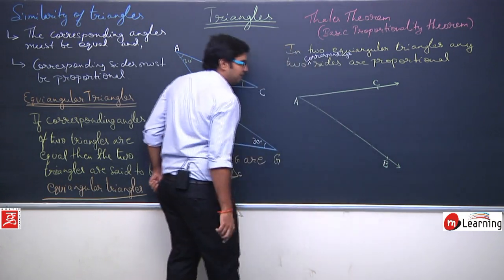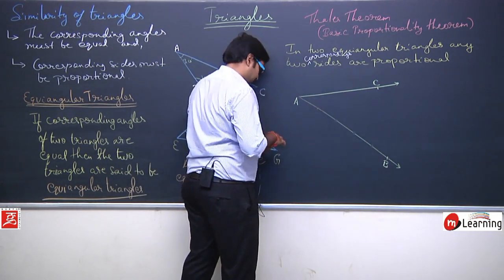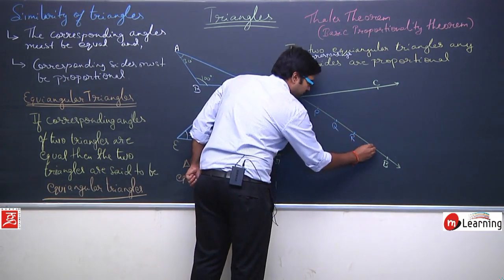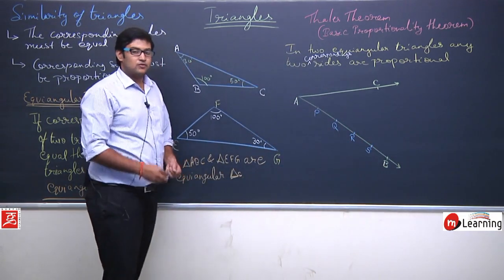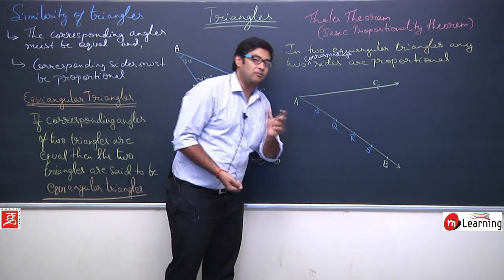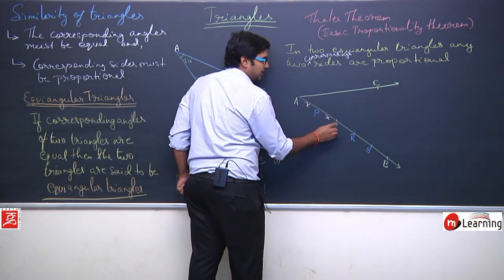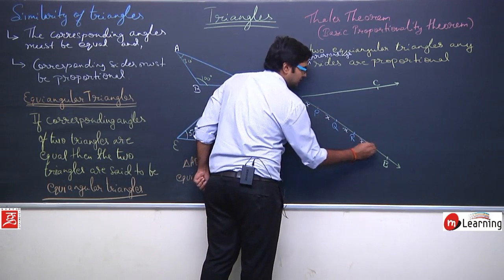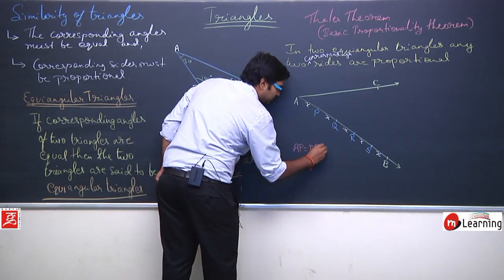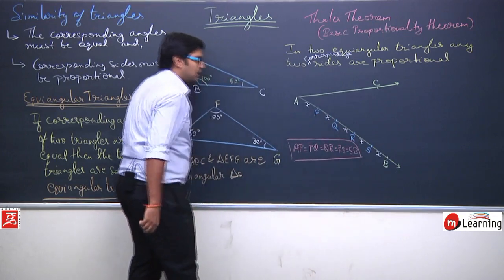He marked these equidistant points such that AP = PQ = QR = RS = SB, each equal to some distance X. So A-P is X, P-Q is X, Q-R is X, R-S is X, and S-B is also X. In this manner he marked such equidistant points on the arm A-B of the angle.